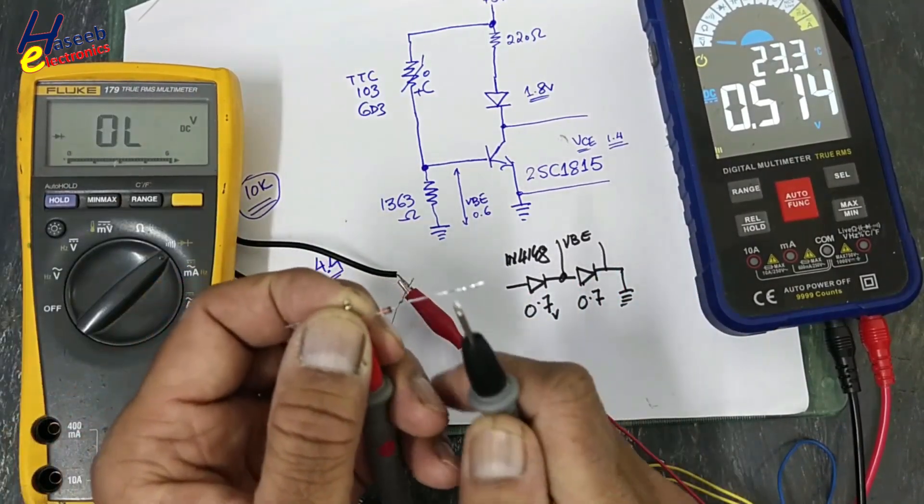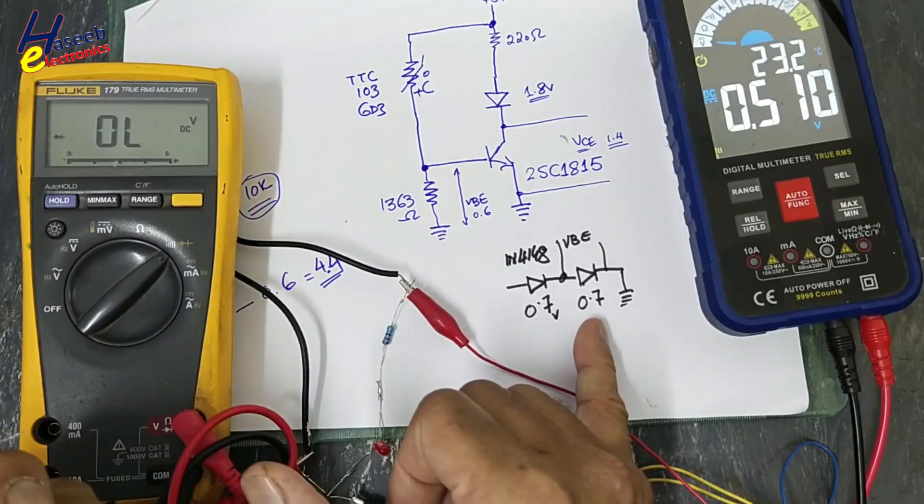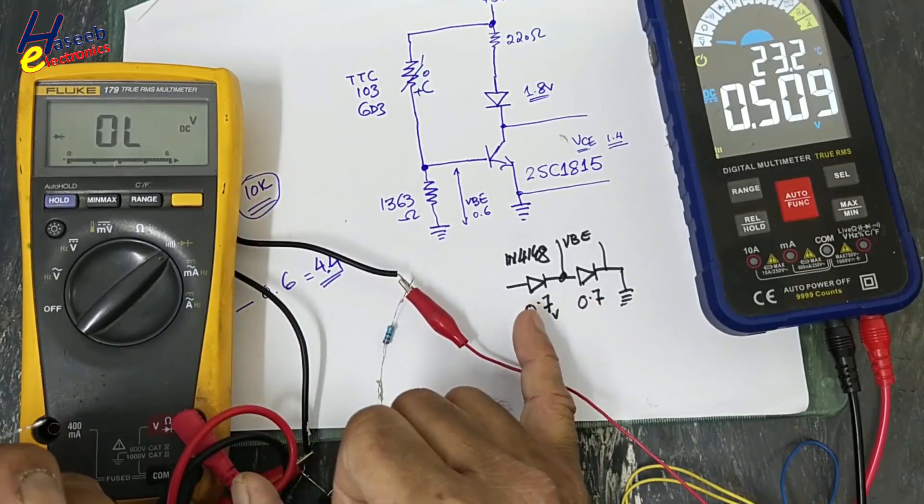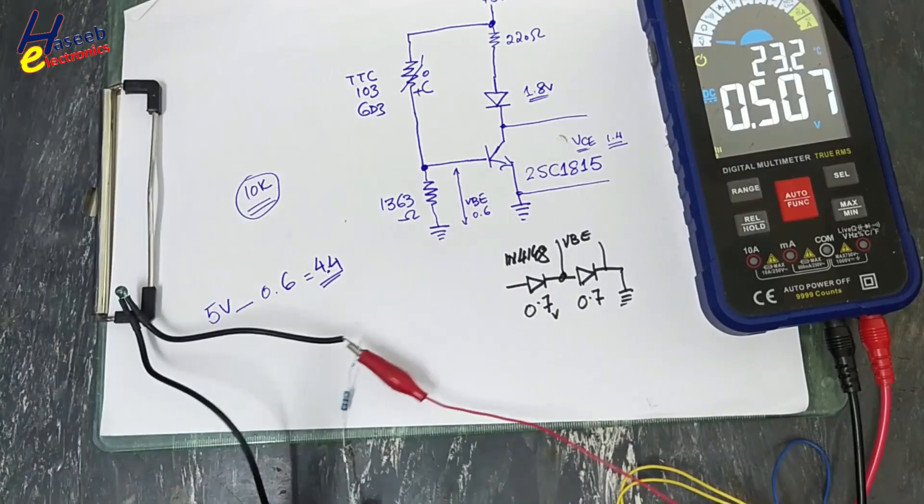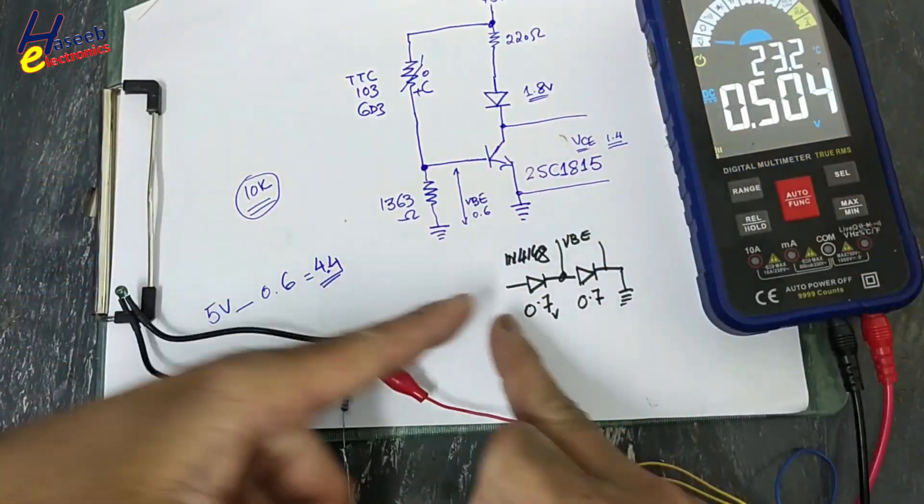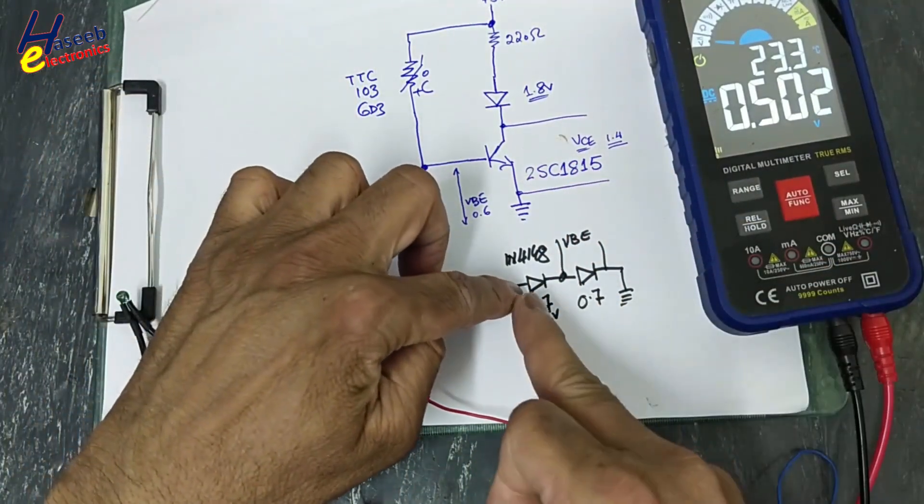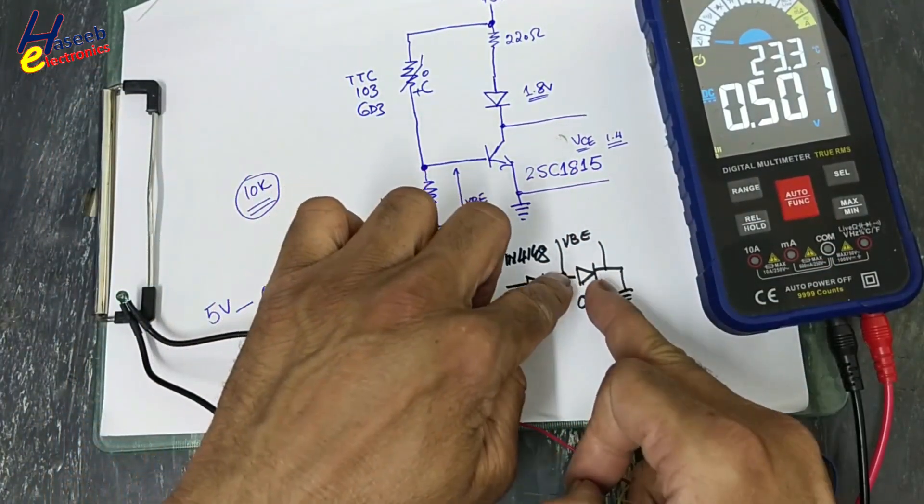Here for this diode, 0.58 volts. If 0.7 this, 0.7 this, 0.7 this, that time it will conduct at 1.4 volts at a specific limit. That time it will forward bias.